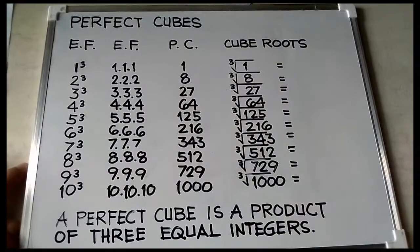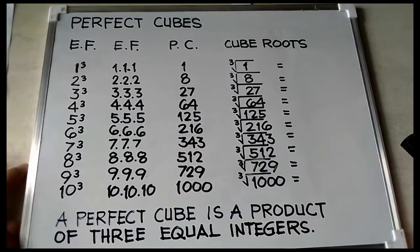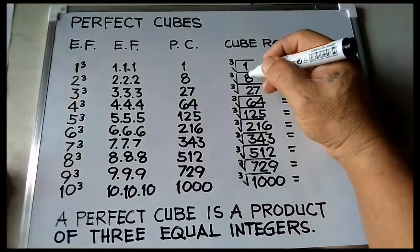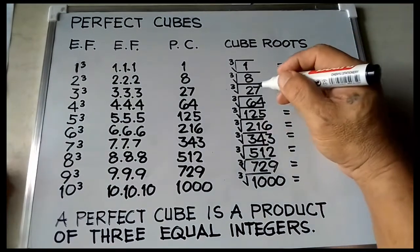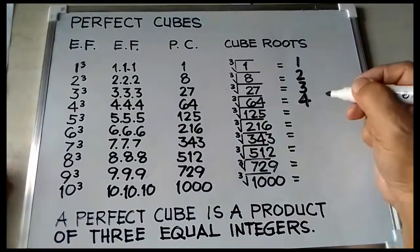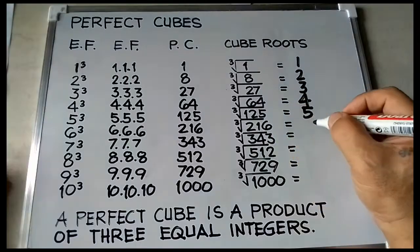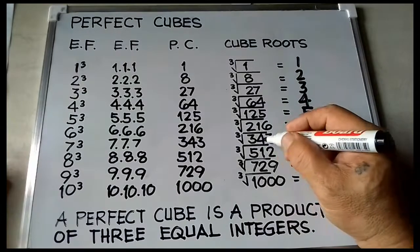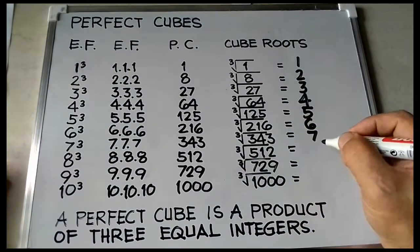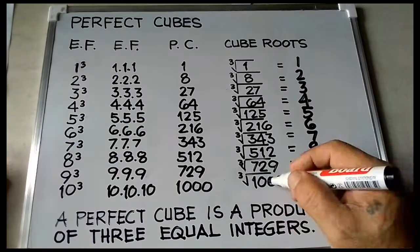A perfect cube is a product of 3 equal integers. So let's get the cube roots: cube root of 1 is 1, cube root of 8 is 2, cube root of 27 is 3, cube root of 64 is 4, cube root of 125 is 5, cube root of 216 is 6, cube root of 343 is 7, cube root of 512 is 8, cube root of 729 is 9, cube root of 1000 is 10.